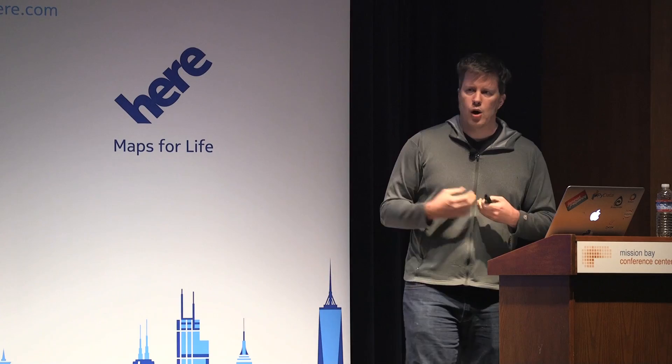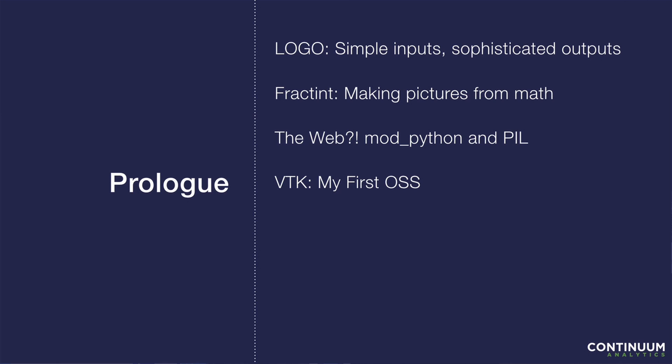My first real open source contribution was VTK — a very large C++ library for 3D visualization that started in the late 90s. What really struck me was it was the first instance I'd ever seen of a really thorough and comprehensive testing infrastructure. They had an amazing dashboard where they tested VTK across 20 or 30 platforms. It was automated and happened every day. I had never seen anything like that coming out of school. And the opportunity to contribute back was a really fantastic thing.